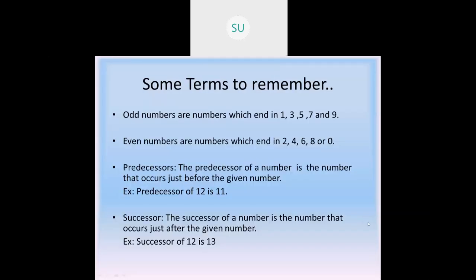We saw some terms to remember: odd numbers are any numbers ending with 1, 3, 5, 7, and 9. Numbers which end with 2, 4, 6, 8, or 0 are called even numbers. Predecessors are the number that occurs just before the given number — if your given number is 21, its predecessor will be 20.